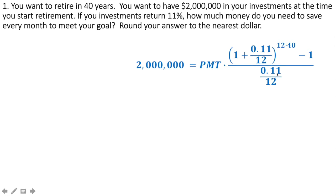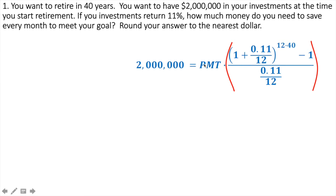We know it's 11% interest in 40 years. We know all of this stuff — we're just looking for PMT. When we're solving in mathematics, we need to get PMT all by itself. If we look and pay attention, this is payment times the entire big fraction. So if I want to get rid of it, all I have to do is divide both sides by that whole quantity in the red parentheses. If I divide both sides by that, I get my payment all by itself. I just take my $2 million and divide it by that fraction.